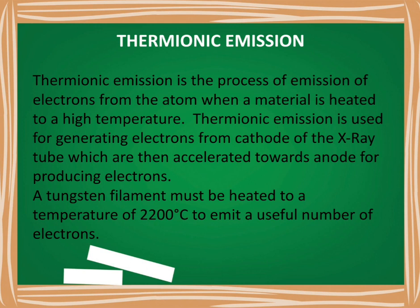The cathode of the X-ray tube is made of tungsten, which must be heated to a temperature of 2200 degrees Celsius in order to emit a useful number of electrons. We will discuss thermionic emission in more detail in the next video on the construction and working of the X-ray tube, where you can learn more about the importance of thermionic emission.